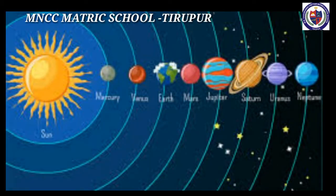The Solar System: The word 'solar system' is derived from the Roman word 'sol', which means sun god. The solar system is believed to have formed about 4.5 billion years ago. It is a gravitationally bound system which comprises of the sun, the eight planets, dwarf planets, satellites, comets, asteroids and meteoroids.